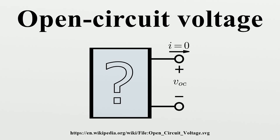Open circuit voltage is the difference of electrical potential between two terminals of a device when disconnected from any circuit. There is no external load connected, and no external electric current flows between the terminals. It is sometimes given the symbol VOC.